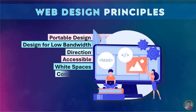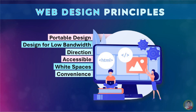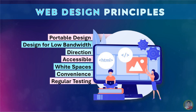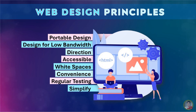Number six is convenience — it allows visitors to make an action; click buttons should be conveniently located and accessible. Number seven is regular testing — a website should be regularly upgraded, updated, and tested so that problems will be quickly resolved. And number eight is simplify — it removes distracting options and clutter.